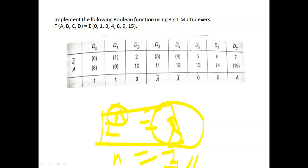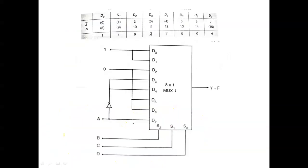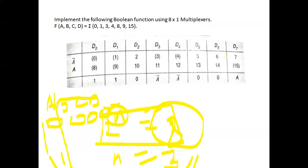For the 4-variable function using variables A, B, C, D starting from 0000, variable A is the input data and B, C, D are the select lines. A ranges from 0 to 7 as A-bar, then 8 to 15 as A. So positions 0 to 7 are A-bar, and positions 8 to 15 are A.